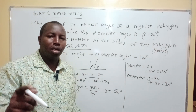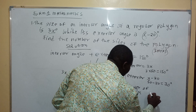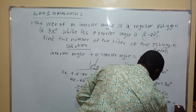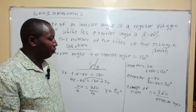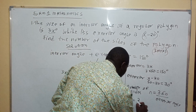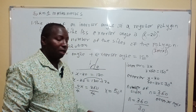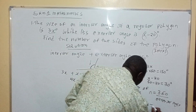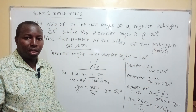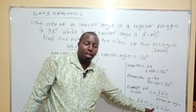To find the number of sides of the polygon, n, we use the formula: n is equal to 360 divided by the exterior angle. So therefore n is equal to 360 divided by 30 degrees, which comes to 12 sides. Therefore n is equal to 12.